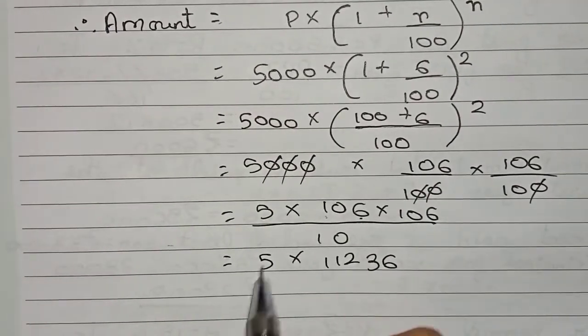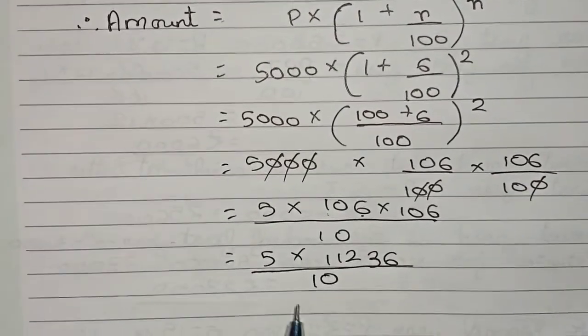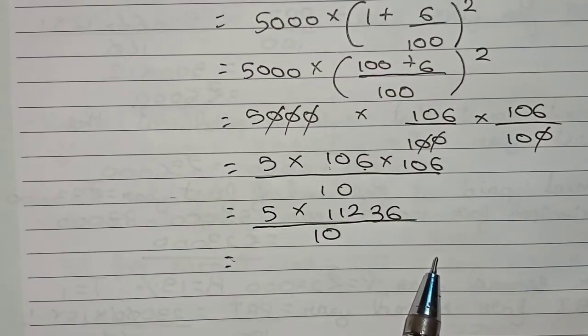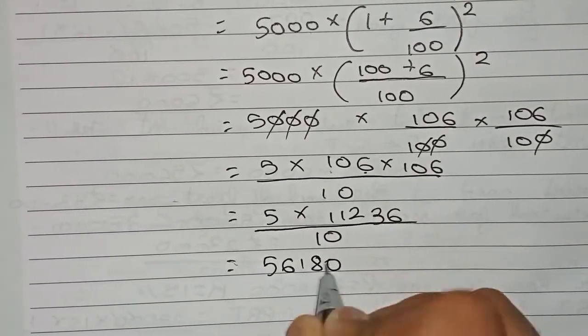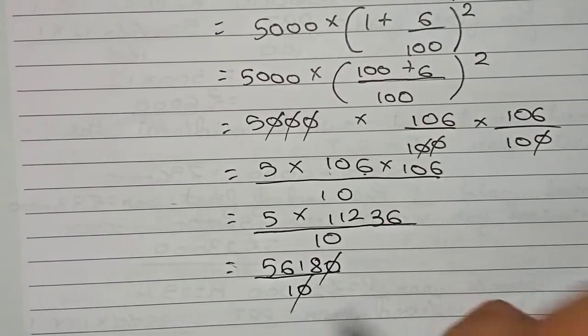Now 5 into 11236 becomes 56180, divided by 10. By 10 means we will just cut one zero. So it remains rupees 5618.